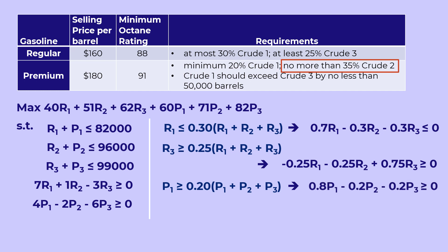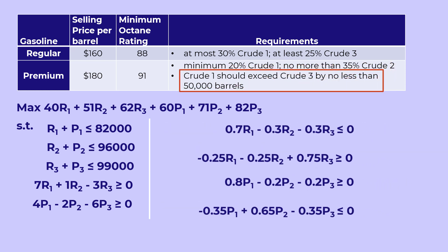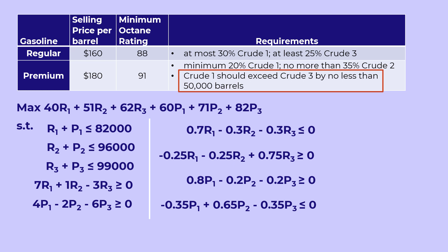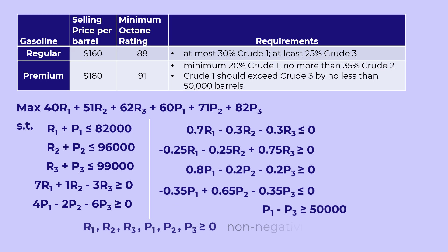No more than 35% crude 2 can be written as P2 less than or equal to 0.35 times premium, and that can also be rewritten as shown. For the last premium constraint, crude 1 should exceed crude 3 by no less than 50,000 barrels. This means crude 1 in premium should be at least 50,000 barrels more than crude 3 in premium. We bring P3 to the left to have no variable on the right side. Finally, adding the non-negativity constraints, we have the complete LP model.